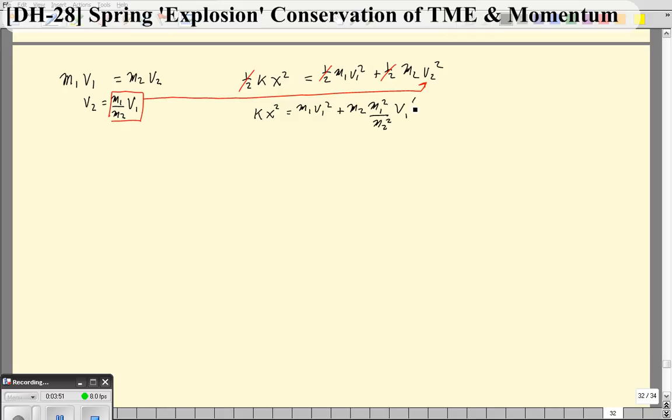And when you look at this, what I like to do is see that you have M2 on the bottom, M2 on the top here. So I'm going to cancel this M2 out and one of these M2s. And we can see that we can add these two terms together. And that's going to give us Kx squared equals M1 plus M1 squared over M2 times V1 squared.